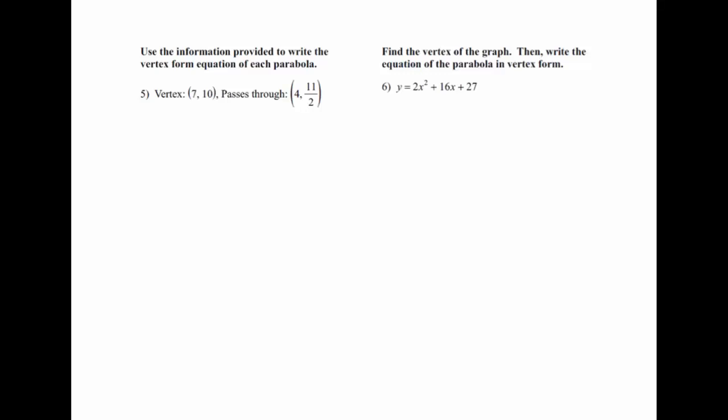Use the information provided to write the vertex form equation of each parabola. They're giving us the vertex and a point, and we need to know the vertex form equation in general: y equals a times (x minus h) squared plus k. Our vertex is h and k — it's a special point so instead of calling it x and y again, we call it h and k. The other point we have is a generic x and y.